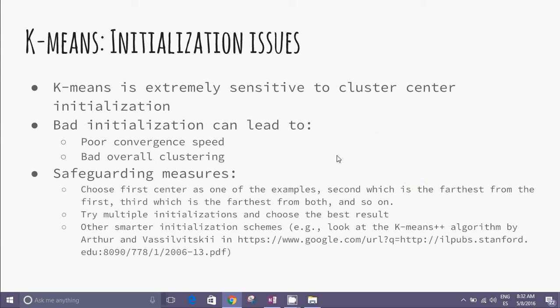The K-means algorithm is extremely sensitive to cluster center initialization. Bad initialization can lead to poor convergence speed and bad overall clustering. We can avoid this by choosing the first center as one of the examples, the second as the one farthest from the first, the third as farthest from both, and so on. Or try multiple initializations and choose the best result. There are other smarter initialization schemes in the literature.